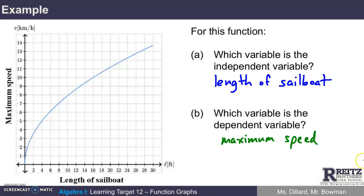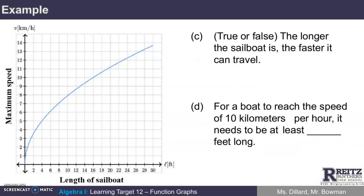Now, along with this goal, our secondary goal here is to be able to also use the graph to interpret some information. So here are some other questions that we want to try to answer using the graph we're given. Look at C. True or false? The longer the sailboat is, the faster it can travel.